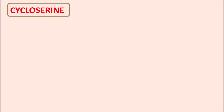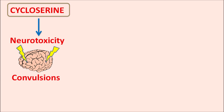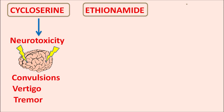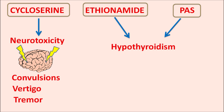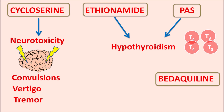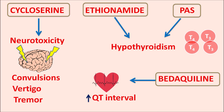Cycloserine produces neurotoxicity affecting central neurons, resulting in convulsions, vertigo, and tremor. Ethionamide and para-aminosalicylic acid both affect thyroid levels, causing hypothyroidism by decreasing T4 and T3 hormone levels. Bedaquiline, an increasingly important drug in tuberculosis treatment, can produce gastrointestinal side effects and, importantly, prolongs the QT interval on ECG, which may lead to fatal cardiac arrhythmias. It should be used cautiously in patients with cardiovascular complications.